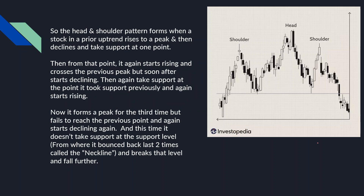A typical Head & Shoulders Pattern forms when a stock in a prior uptrend rises to a peak and then declines and takes support at a point. Looking at this diagram, the stock is in an uptrend going up and down, and one day it rises to a peak and then suddenly starts declining. After a small decline of maybe 10–15%, it forms a kind of a base and then again starts rising, crossing the previous peak it formed.